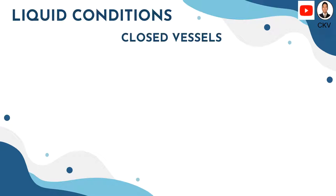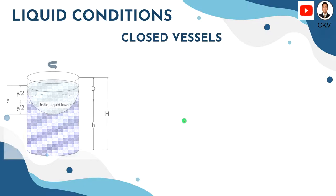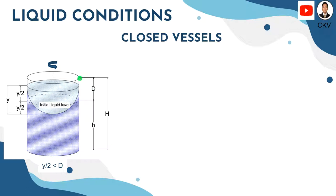In closed vessels we have different liquid conditions. First, if Y over 2 is less than the distance D — the distance from the top rim of the closed vessel to the initial liquid level — we have the same figure as with an open vessel where no water will be spilled. The depth Y will be distributed equally above and below, starting at the side and ending at the vertex of the paraboloid.